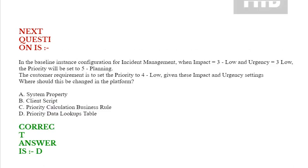Next question: In the baseline instance configuration for incident management, when impact is equal to 3 (low) and urgency is equal to 3 (low), the priority will be set to 5 (planning). The customer requirement is to set the priority to 4 (low). Given these impact and urgency settings, where should this be changed in the platform? Option A: System property. Option B: Client script. Option C: Priority calculation business rule. Option D: Priority data lookups table. Correct answer is Option D.